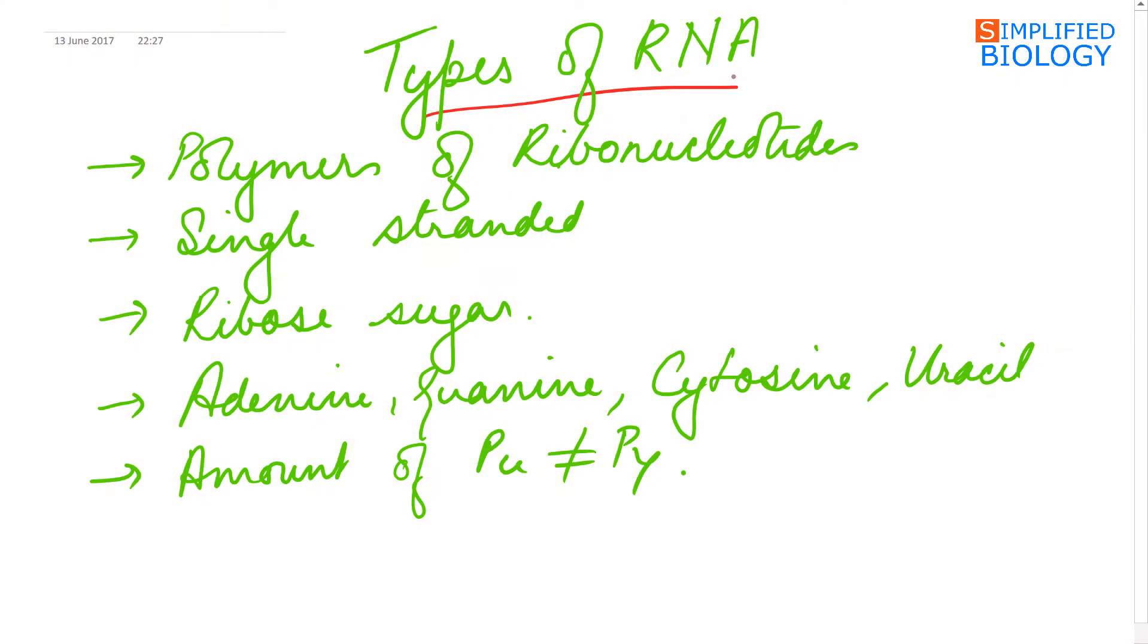RNA, that is ribonucleic acid, is a polymer of ribonucleotides and it is always single-stranded. The nucleotides are made up of pentose sugar, that is ribose sugar. Nitrogenous bases present are adenine, guanine, cytosine, and uracil. Uracil instead of thymine, and the amount of purine is not equal to pyrimidine as seen in case of DNA.